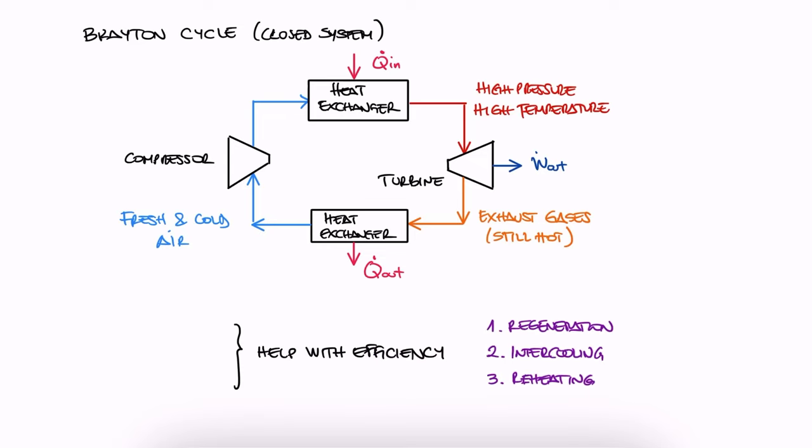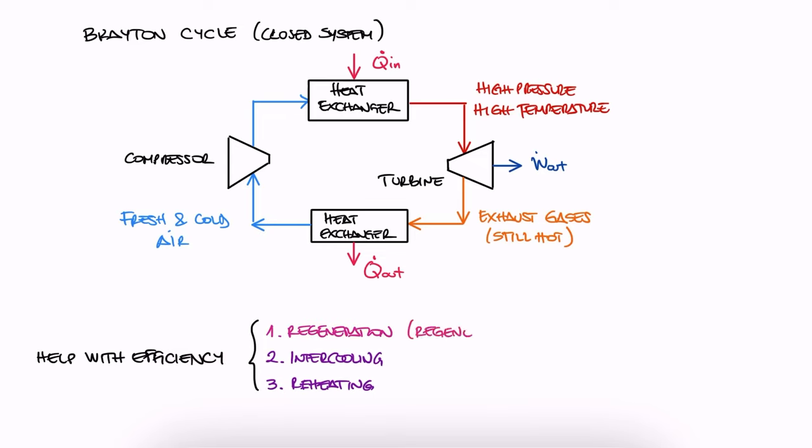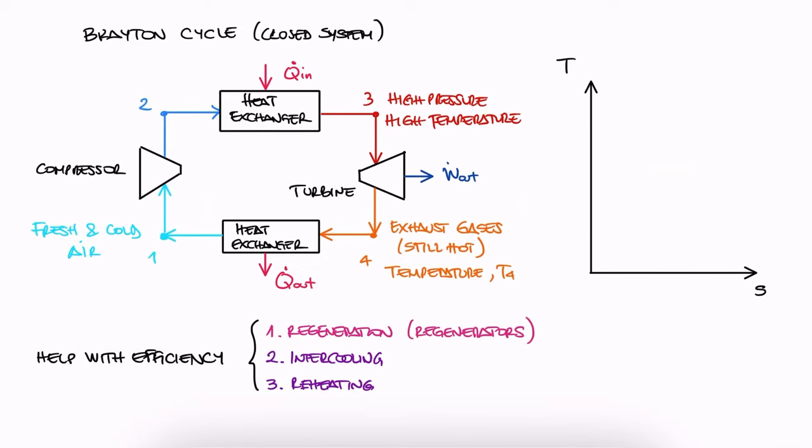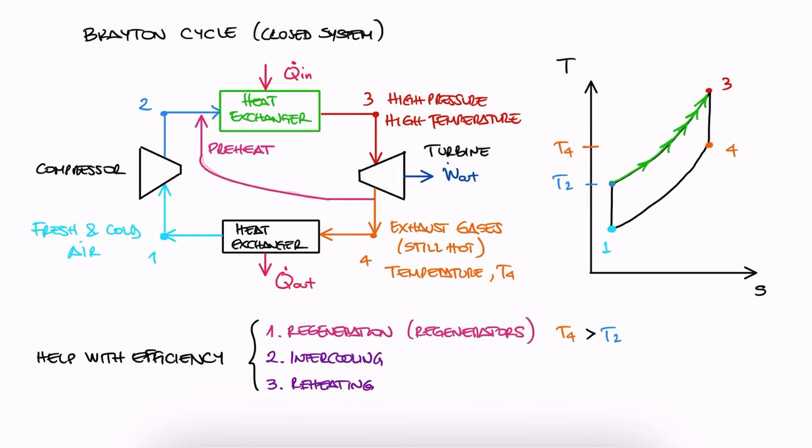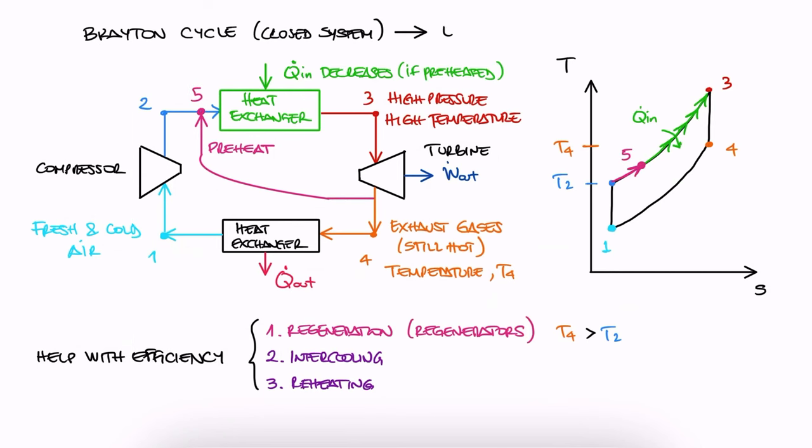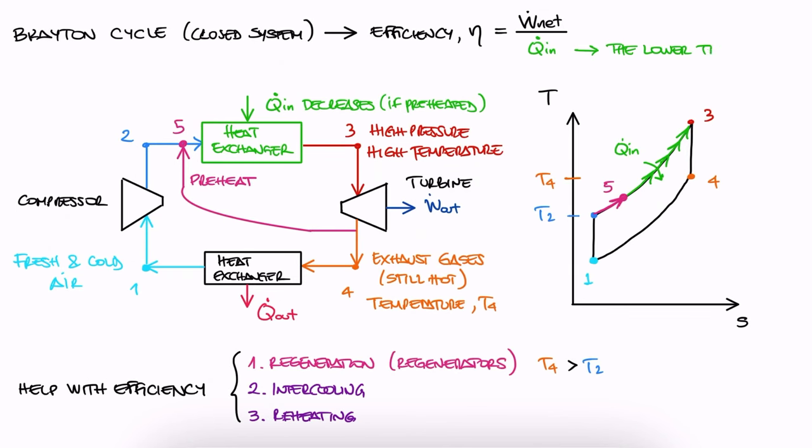In the main lecture video, we briefly touched on the first of these three devices, the regenerators. We pointed out that the temperature after the turbine at 4 is still hotter than the relatively cool compressed air at 2. And since we want to heat the air at the heat exchanger, it makes sense to preheat the air right before the heat exchanger with the hot air that is already coming out of the turbine. That way, the required heat in at the heat exchanger is less, and since the efficiency of the cycle will depend on that heat, the efficiency can therefore be higher.